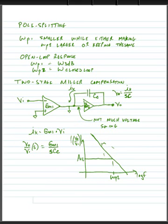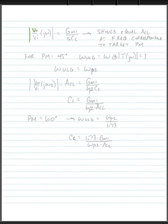Okay. Writing that out, we can say that Vout over VN, the magnitude of J omega, is equal to GM1 VN over SCC.